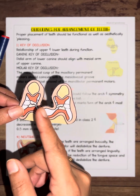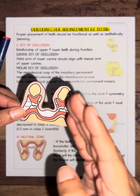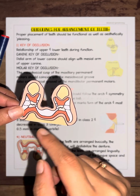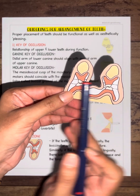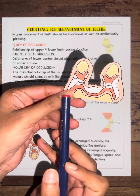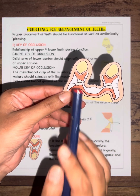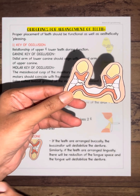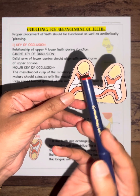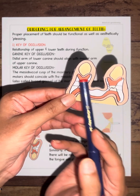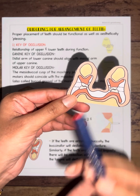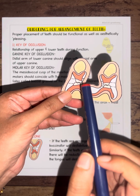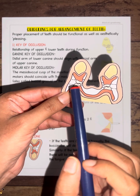When doing the arrangement, you also have soft tissues covering the teeth — lingually the tongue, and buccally the lips and cheeks. If teeth are arranged too buccally, the buccinator muscle will create pressure and dislodge the denture. If placed too lingually, the tongue will displace the denture. Therefore, teeth must be in the neutral zone.